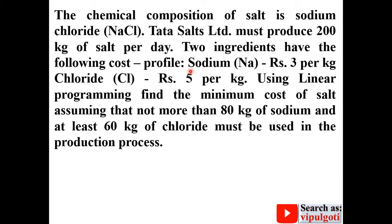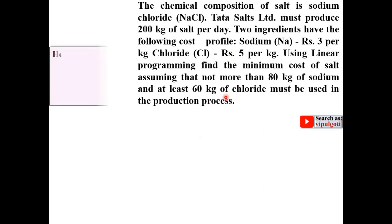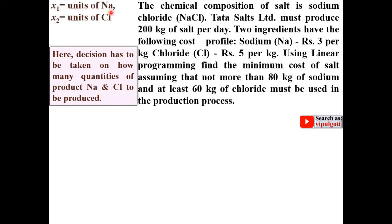First you have to formulate the problem from the description and then apply the graphical method. The first decision is how many quantities of sodium and chloride to produce. So there are two decision variables: x1 equals units of sodium and x2 equals units of chloride.